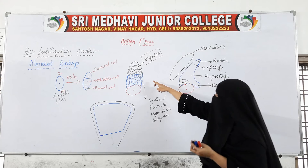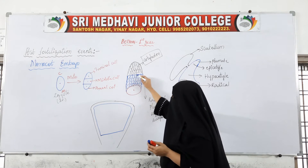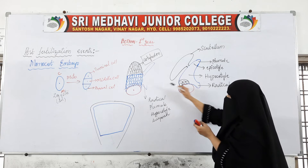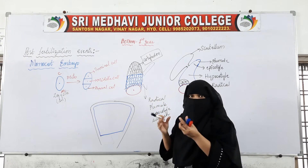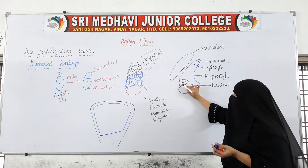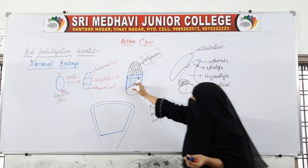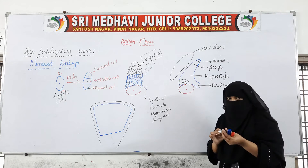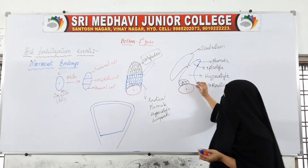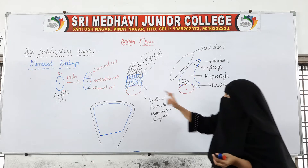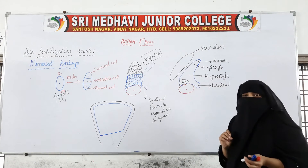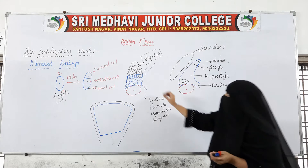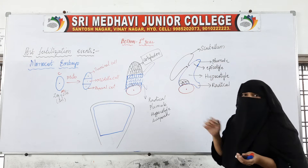The middle cell will further divide and change into a structure with different regions. A few cells will change into the suspensor. The cells at the next part will change into the radicle. The cells after that will form the hypocotyl. And the cells above will change into the epicotyl and plumule.